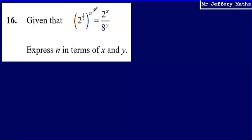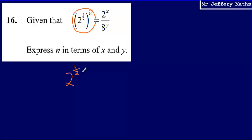The first thing I'm going to do is take this power and simplify it. If I'm raising 2 to the power of half to the power of n, what I can do is multiply half by n to write that as a single power of 2. So I can say that is 2 to the power of half n, and that is equal to...